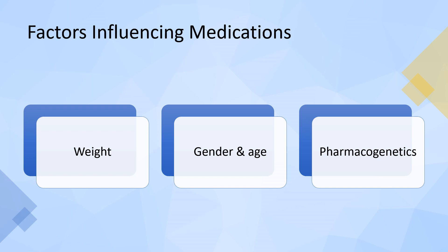Some individuals prefer herbs to treat and prevent illness, and it is important for the nurse to determine any use of herbal medications. Pharmacogenetics is how particular individuals and ethnic groups respond to specific medications. Studies have shown genetic phenotypes found with hypertension where certain individuals do not respond to specific classifications of medications routinely used to treat hypertension, and it may be necessary to add a diuretic to their medication regimen.